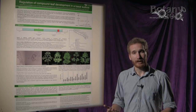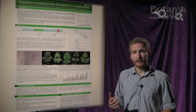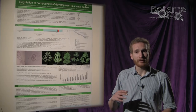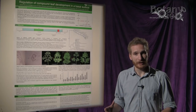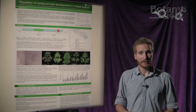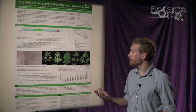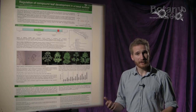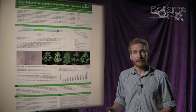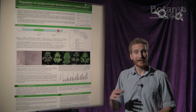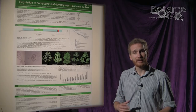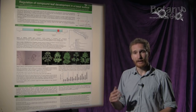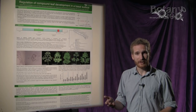In particular, I am looking at leaf development with regards to the Cincinnati gene. Cincinnati, identified in Antirrhinum, and also the homologue Lanceolate in tomato, and the duplicated homologues TCP3, TCP4, and TCP10 in Arabidopsis.